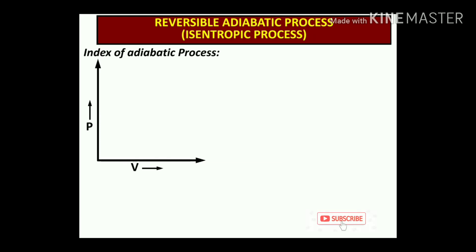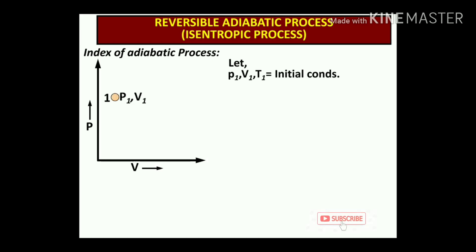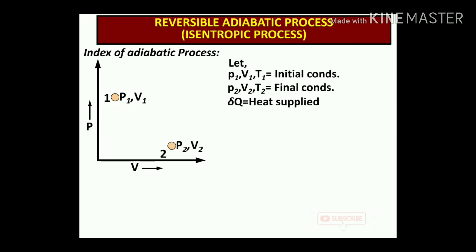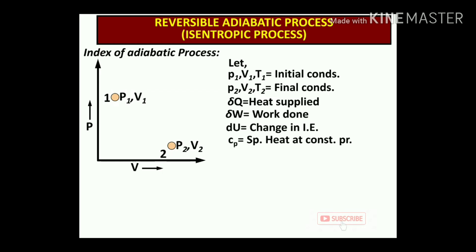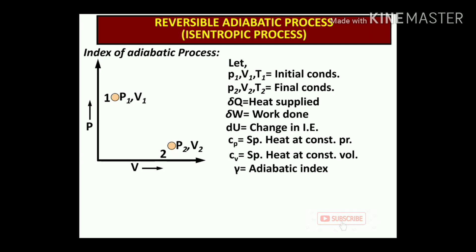Summary of the adiabatic process notation: P1, V1, T1 are initial conditions; P2, V2, T2 are final conditions. δQ is heat supply, δW is work done, dU is change in internal energy, Cp is specific heat at constant pressure, Cv is specific heat at constant volume, and γ (gamma) is the adiabatic index. The P-V graph represents PV^γ = constant for the adiabatic process.